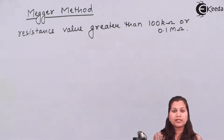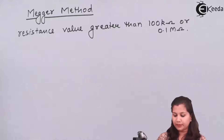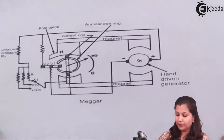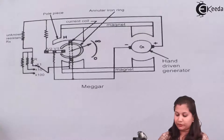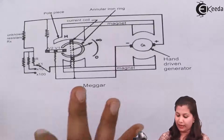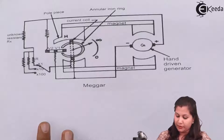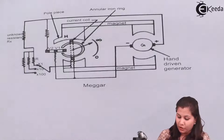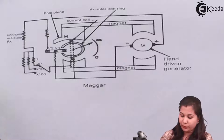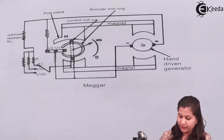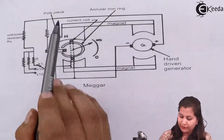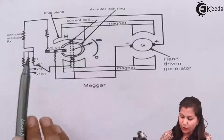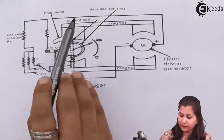Let us first see the construction of the Megger circuit. This is the diagram for the Megger method. In this we have the Megger, so let us see the various components. First we have the current coil and the potential coil.